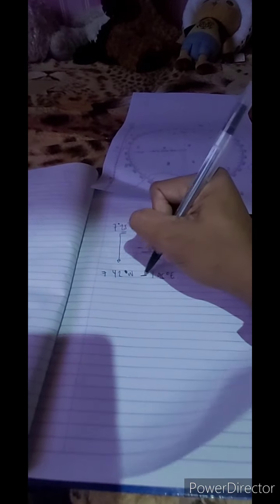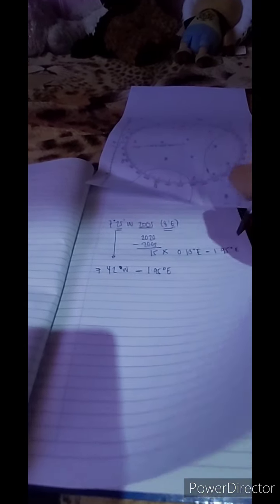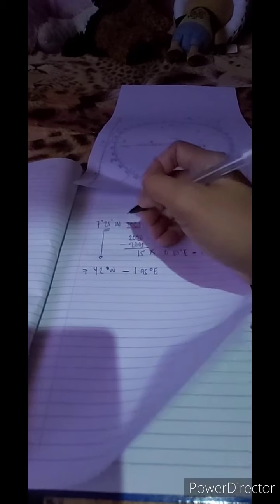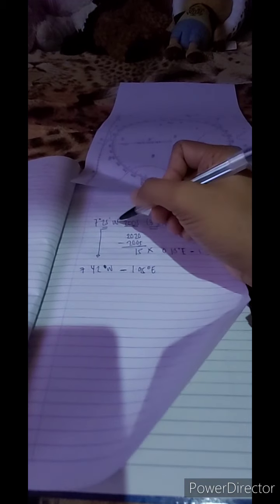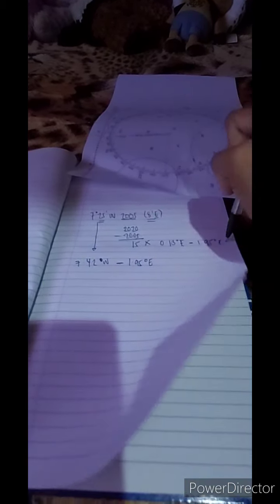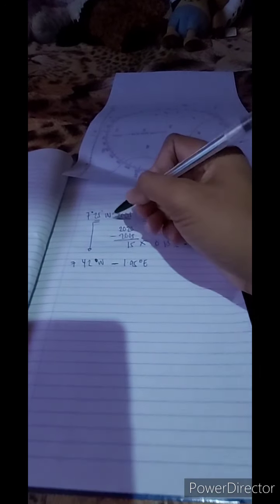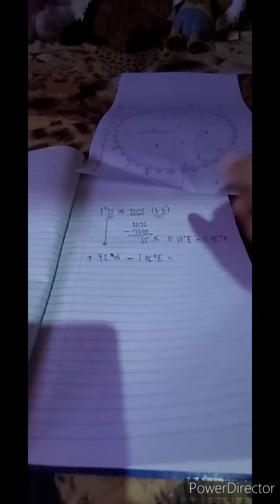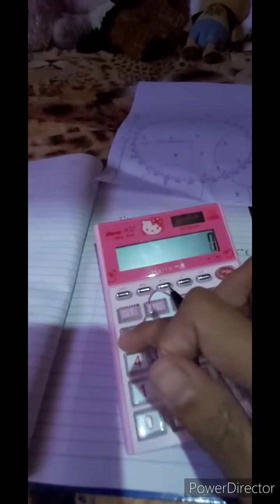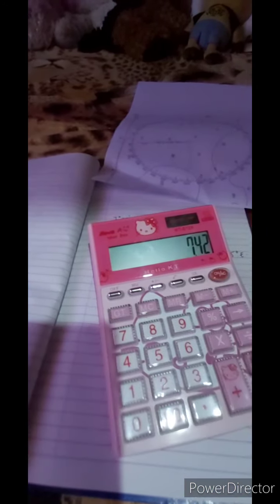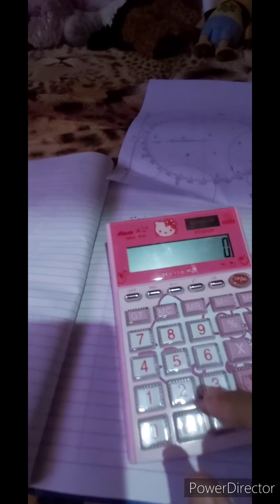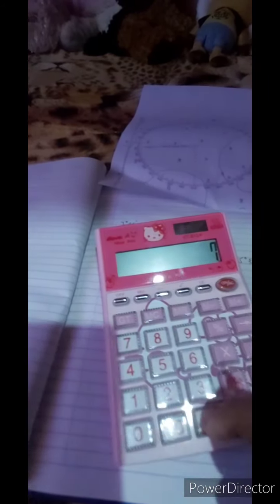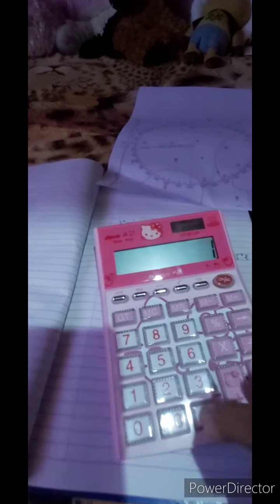Why subtract? You subtract because they have different names. If they have the same name, which is west and west, or east and east, you add. But this time they have different names, so you subtract. So 7.42 minus 1.95.